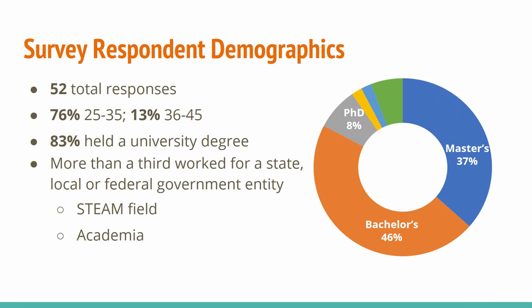However, we also evaluated responses from people that identified as 60 years or older. Eighty-three percent held some form of post-secondary school education, which included an associate's, master's, or PhD or beyond. And finally, we asked about work history. More than a third identified as working for a state, local, or federal government entity. About 20% identified as working in a science, technology, engineering, arts, or math field, and just slightly less than that indicated that they worked in an academic field.